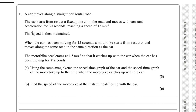We're on to the mechanics section now. Question 1 says a car moves along a straight horizontal road, starting from rest at fixed point A and moving with constant acceleration for 30 seconds, reaching a speed of 15 metres per second. This speed is then maintained. When the car has been moving for 15 seconds, a motorbike starts from rest at A, moving in the same direction, accelerating at 1.5 metres per second squared until it catches the car at time T. Part A says sketch the speed-time graph of both the car and motorbike.